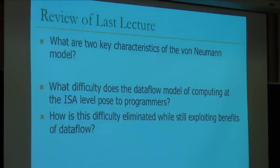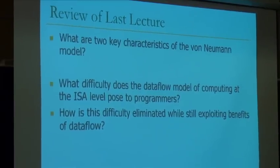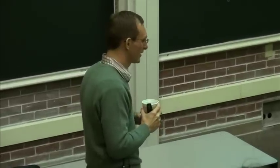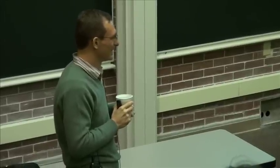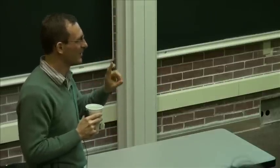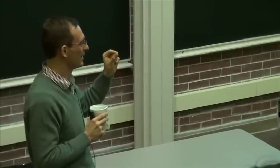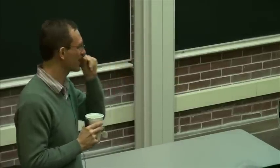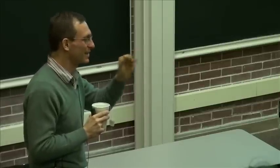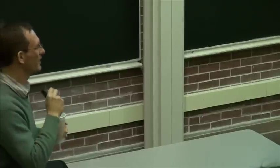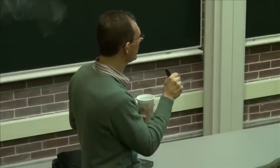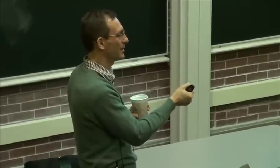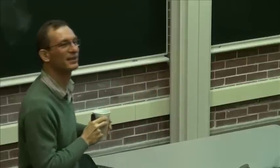Last lecture, we covered von Neumann architecture and an alternative — the Dataflow architecture. The two key characteristics of von Neumann architecture are: first, sequential instruction processing — an instruction needs to finish before the next one gets started. Second, the stored program concept — the program is stored in memory, and there's no distinction between instructions and data except in how you interpret the value when you access it.